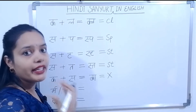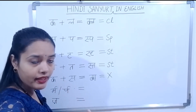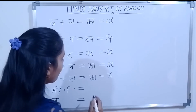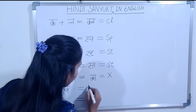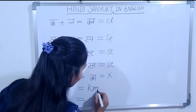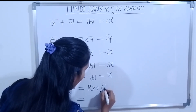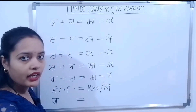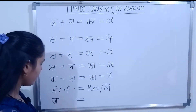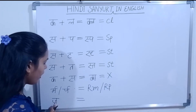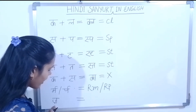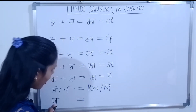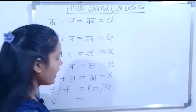Agar 'ma' mein rep aayega ya 'po' mein rep aayega, to hum usko kaise likhenge English mein? R, M. Aur R, P. Okay? Aur bhi main aapko bata dun — jo mein agar nukta aayega, jo mein iske neeche mein agar aapko nukta aayega, to usko kaise English mein likhenge?